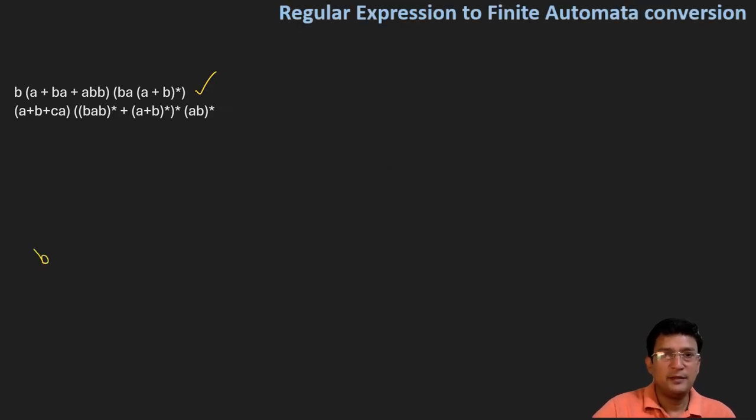This expression is saying that there are the concatenation of multiple symbols. We can construct a basic finite automata. So this is b, a plus b, a plus ab, b, and then b, a, and a plus b for user.